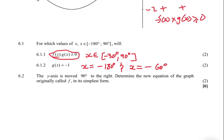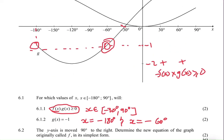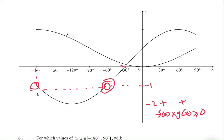Now let's do 6.2. Question 6.2 says the y-axis is moved 90° to the right. Determine the new equation of the graph originally called f, in its simplest form. So our y-axis is moving from this point here to somewhere here.